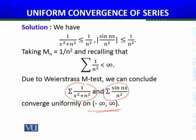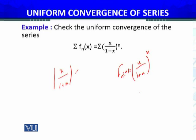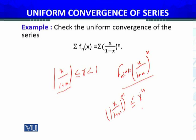In the next example, we check the uniform convergence of the series where F_N(x) = x/(1+x)^n. The trick is to find a bound: |x/(1+x)| ≤ r where r < 1. If this holds, then |x/(1+x)|^n ≤ r^n. This gives us our M_N = r^n.